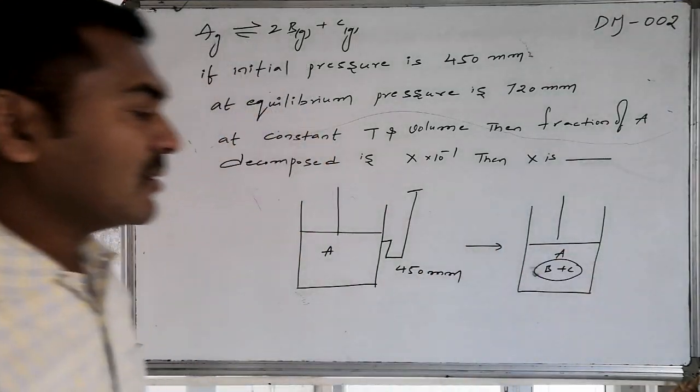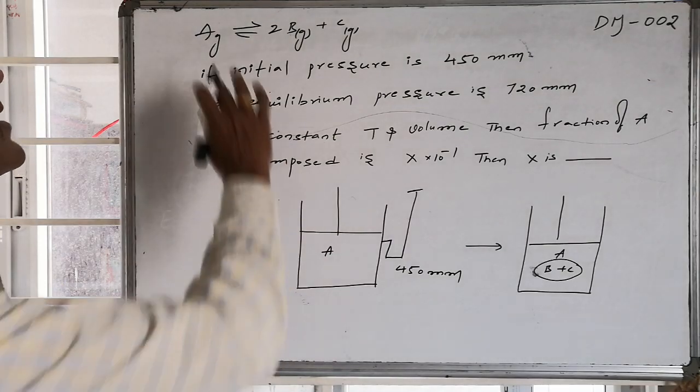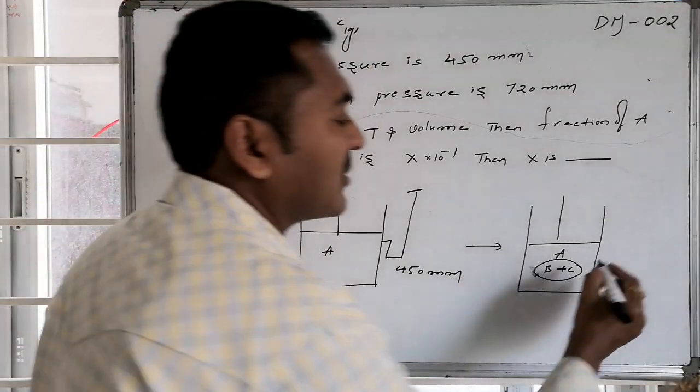Now there is A, B, C. So number of molecules increases. One is converted to many. So therefore number of gas molecules increases.